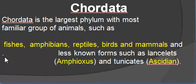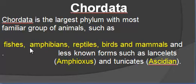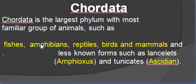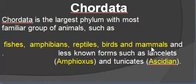Fishes, amphibians, reptiles, birds, and mammals are well-known chordates. Chordates are animals with a backbone. During embryonic development they show a notochord. In fishes, amphibians, reptiles, birds, and mammals, the notochord is replaced by a bony structure called the vertebral column, which is the backbone.